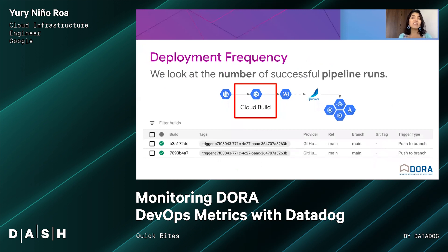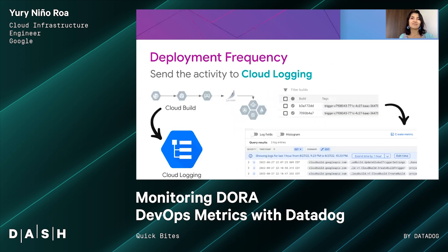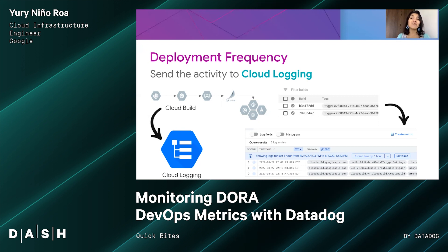With this context, we can review an example for calculating the deployment frequency metric. Since Cloud Build leads to a deployment in a production environment, we could look at the number of successful pipeline runs in Cloud Build. My proposal is using Cloud Logging, which can be connected with Datadog. Cloud Logging logs the activity from Cloud Build. Google Cloud Logging allows you to store, search, analyze, and monitor log data and events from Google Cloud Platform. Since this activity is in JSON format, as you see here, we can send this data to Datadog and visualize it there.